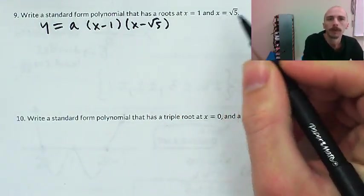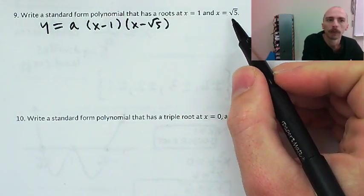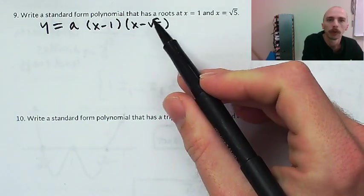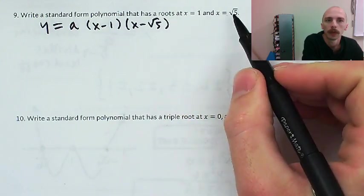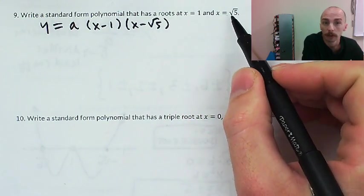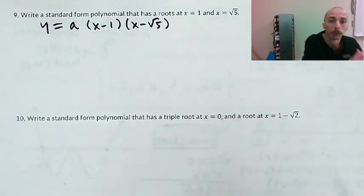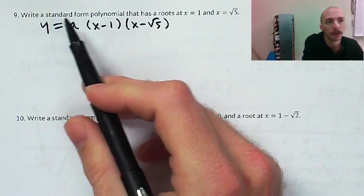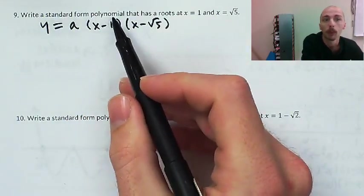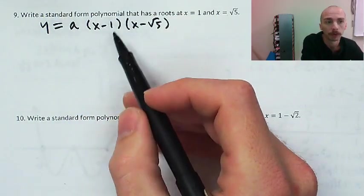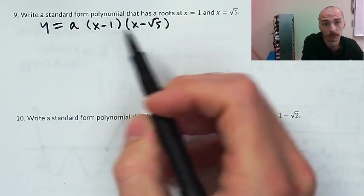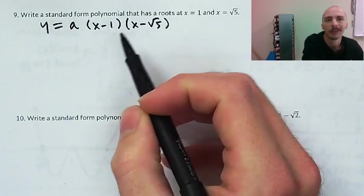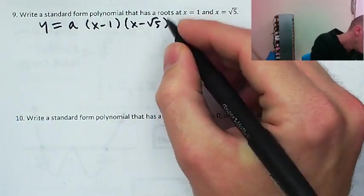We also know that if x equals square root of 5 is going to be a root of the polynomial, then x equals negative square root of 5 will also be a root. Really, what I should have said is standard form polynomial with rational coefficients, because this is going to be a polynomial that has these roots — it just won't have rational coefficients otherwise.